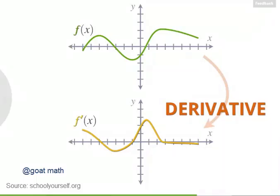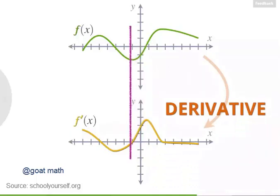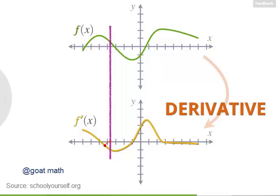Derivatives tell you how quickly functions are increasing or decreasing. Notice that f of x is increasing the fastest over here, and that's where f prime of x has the largest value. And at places where f of x is decreasing, f prime of x is negative.